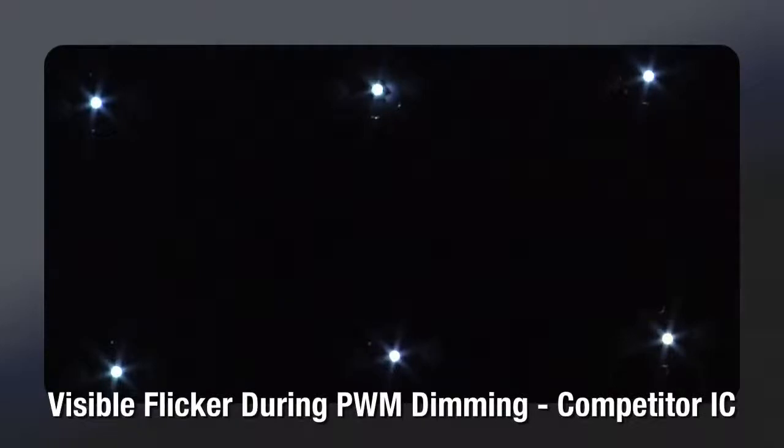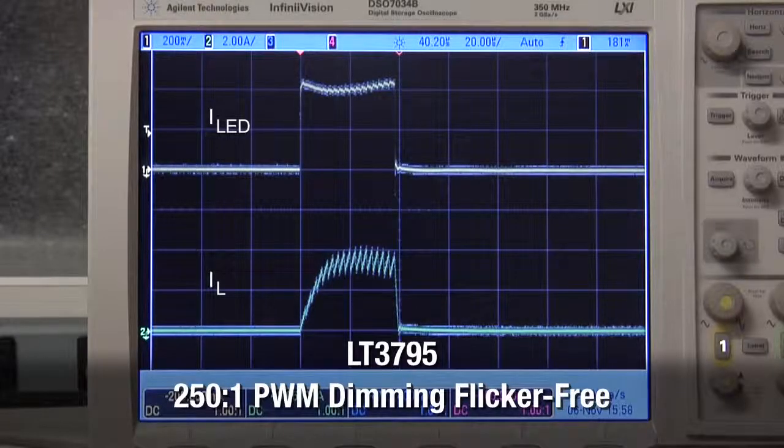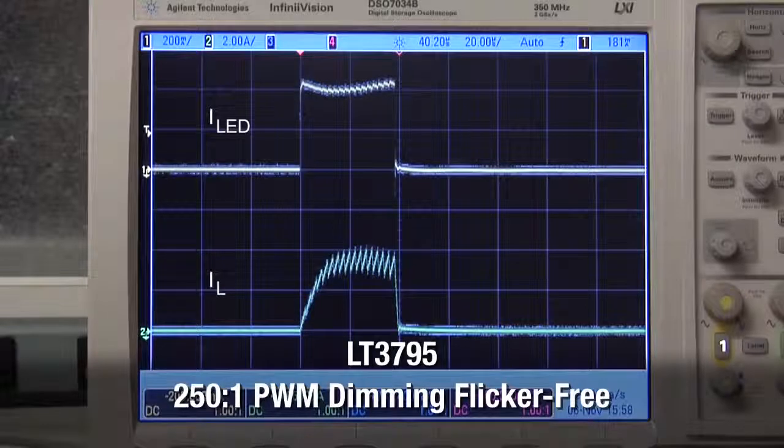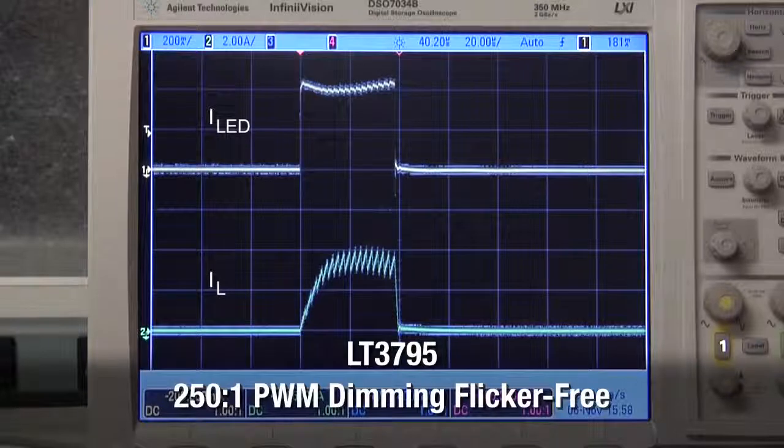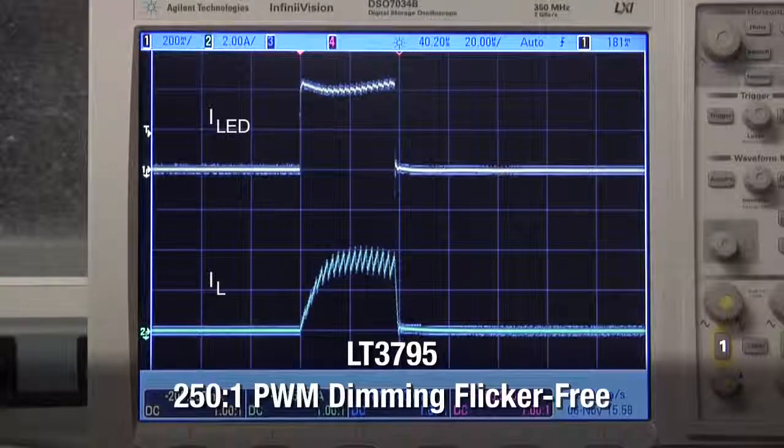One unique concern for LED drivers is the prevention of visible flicker when spread-spectrum is used. With the LT3795, even when PWM dimming, you can see that spread-spectrum does not cause any variation in the LED string current, and there is no flicker due to Linear's proprietary PWM dimming technique.